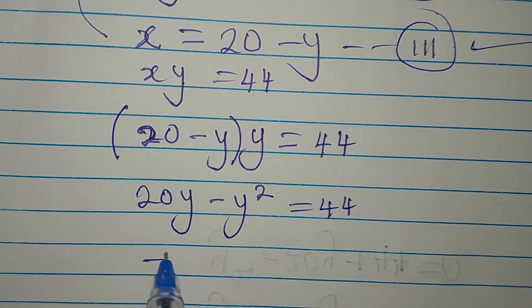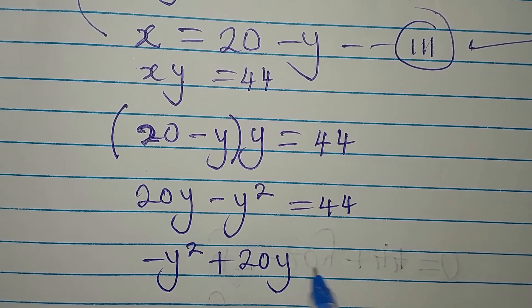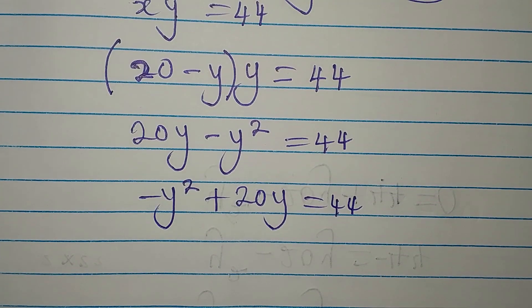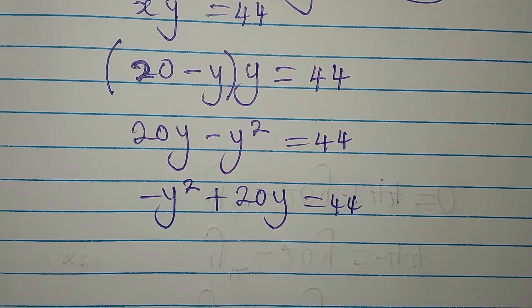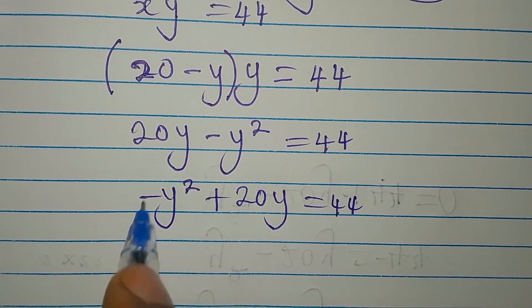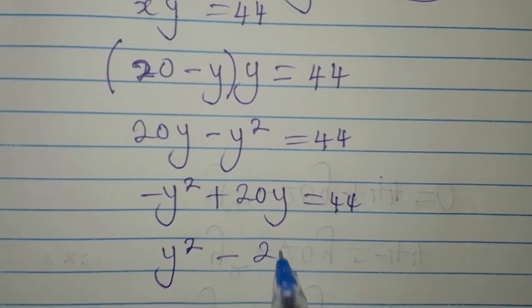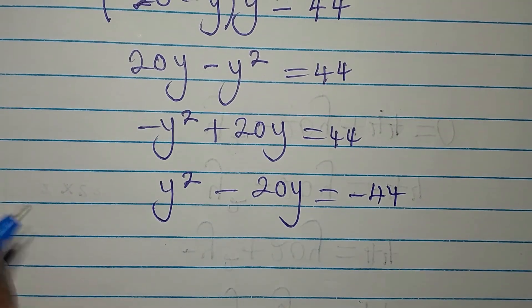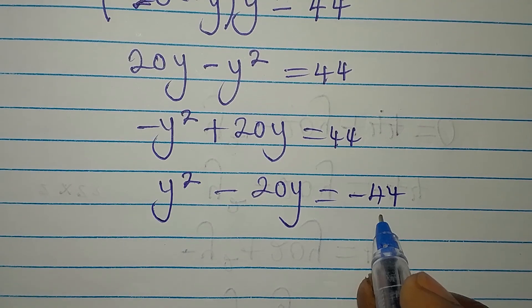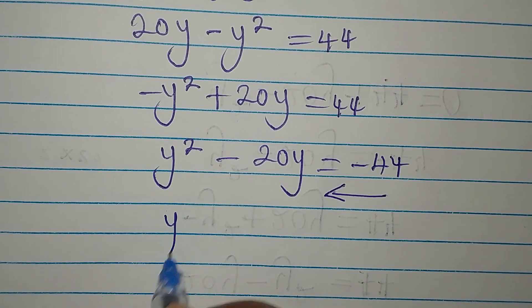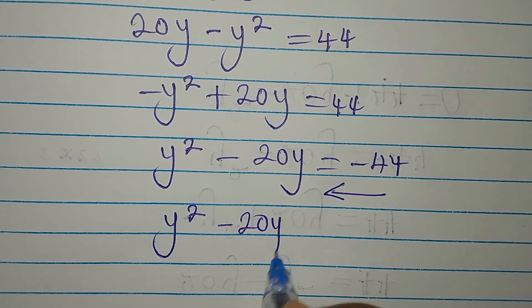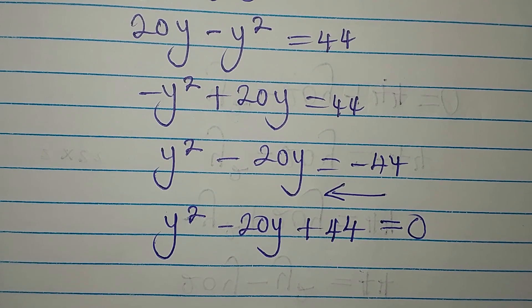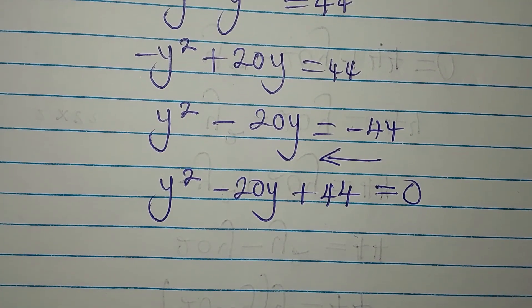We write this as: minus y squared plus 20y equals 44. The leading term should not have a negative coefficient, so we multiply everything by negative one. This gives y squared minus 20y plus 44 equals 0, with nothing on the right-hand side.